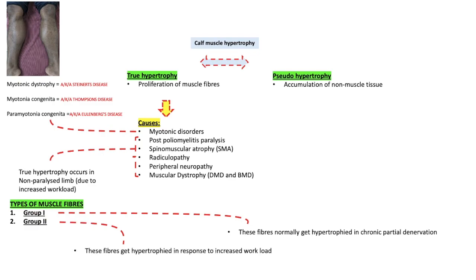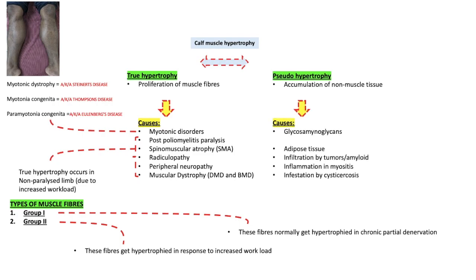That is a compensatory mechanism. Pseudo-hypertrophy can be due to accumulation of glycosaminoglycans, adipose tissue, infiltration by tumors, amyloidosis, inflammation in myositis, or infestation by cysticercosis.